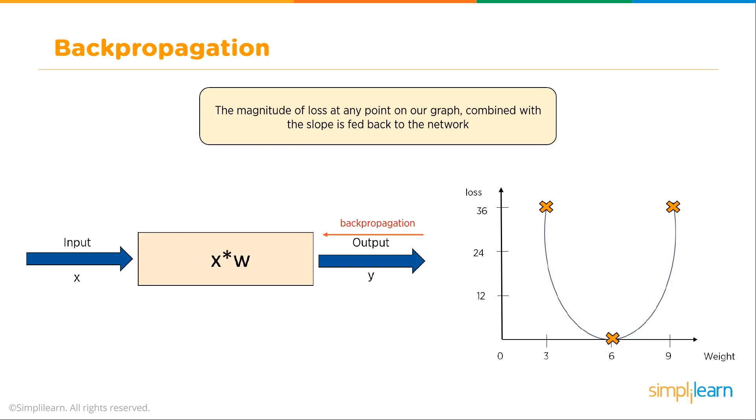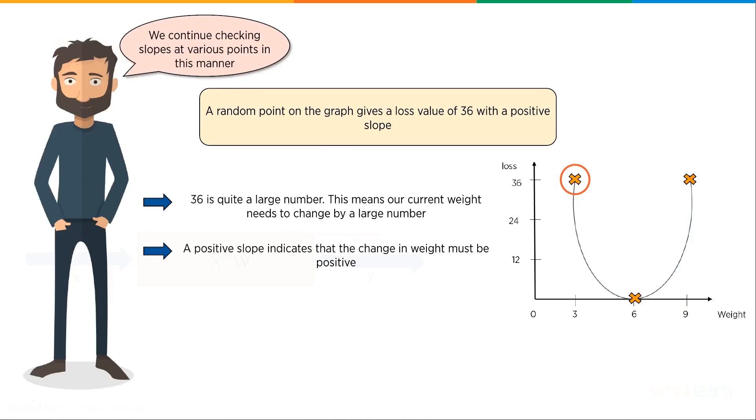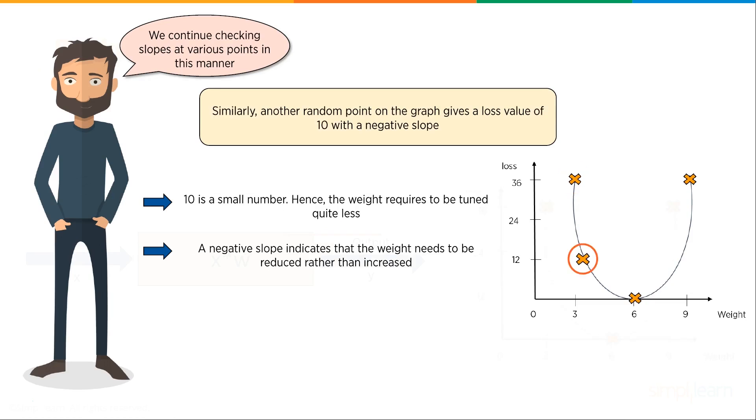Then we're going to propagate that loss going the other way. A random point on the graph gives a loss value of 36 with a positive slope. We continue checking slopes at various points in this manner. 36 is quite a large number. This means our current weight needs to change by a large number. A positive slope indicates that the change of the weight must be positive. Similarly, another random point on the graph gives a loss value of 10 with a negative slope. 10 is a small number, hence the weight requires to be tuned quite less. A negative slope indicates that the weight needs to be reduced rather than increased.